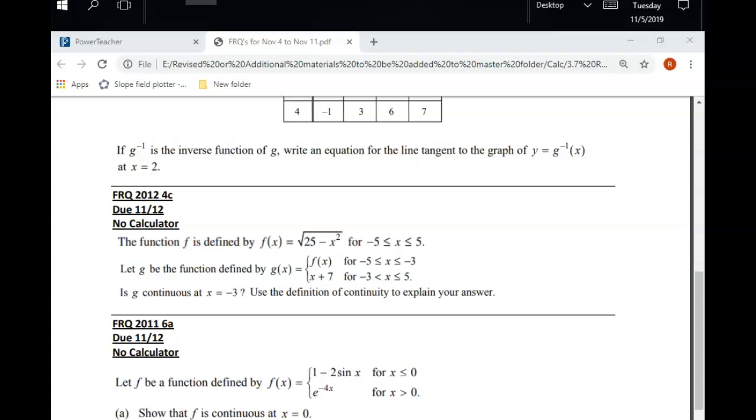And the question is, is it continuous at x equals negative 3? Well, remember, first of all, to show that something is continuous, you have to show that it exists. So you have to find, what is g of negative 3? Does it exist? Okay. Since we're plugging in negative 3, you would use the top function. So you're plugging negative 3 into f of x, which is this function. And I'll leave you with that.